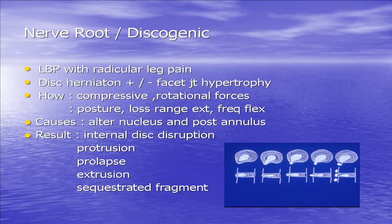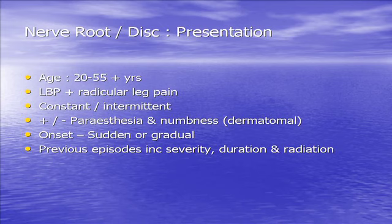Moving on to nerve root / discogenic pain: lower back pain with radicular leg pain, disc herniation plus or minus some facet joint hypertrophy. The result can be internal disc disruption going to protrusion, prolapse, extrusion, or sequestrated fragment. Who presents with this? It should be between 20 and 55. They have radicular leg pain, constant or intermittent. One of the things I always ask is: what's worse — the back pain or the leg pain? Because any intervention the consultants would be considering would be primarily for leg pain. There's no guarantee of change in back pain after surgery — if there is, that's a bonus. But if you get rid of the leg pain and they've got a stiff back, that's our shoe-in to start optimising movement and making an impression on their back discomfort.